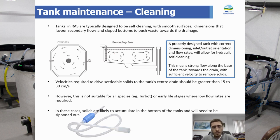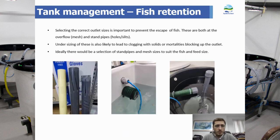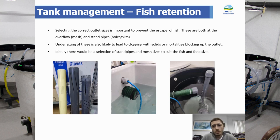As shown here, one option is siphoning, which I'll demonstrate shortly. Whilst we want these solids to be evacuated quickly, we also want to prevent the escape of fish. To do so, we need to correctly select the outlet and overflow sizes, either using a mesh cover or just sizing the holes or slits within these overflows correctly. Undersizing can lead to clogging with solids or mortalities, and ideally you would have a selection to suit the size and feed that you are putting into the system.